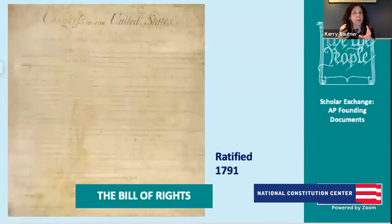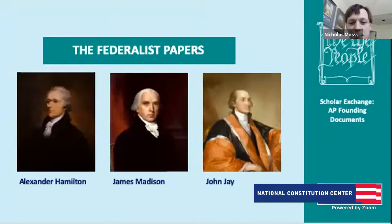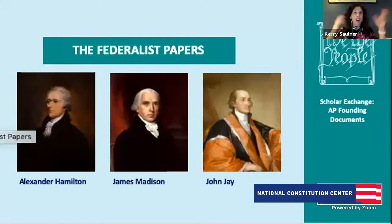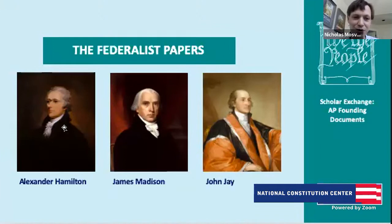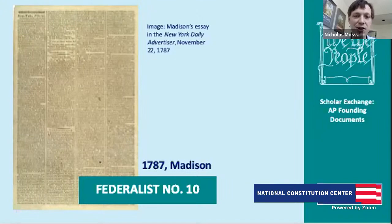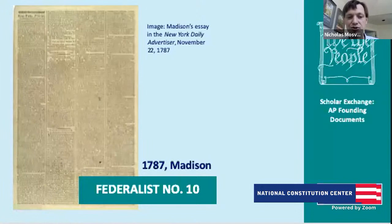Ratification is the story that leads to the Bill of Rights. The Constitution is narrowly ratified by the states, several states demand a Bill of Rights, and Madison ends up agreeing to push one in the first Congress — that's a product of this debate. The Federalist Papers are circulating, Anti-Federalists are writing as well, there's a huge hubbub about ratifying the Constitution. Three men don't sign the Constitution — George Mason, Elbridge Gerry, and Edmund Randolph — and publicly give their reasons for not signing, setting off the ratification debate. The Anti-Federalists, those who oppose ratification, are making their case loudly right away.